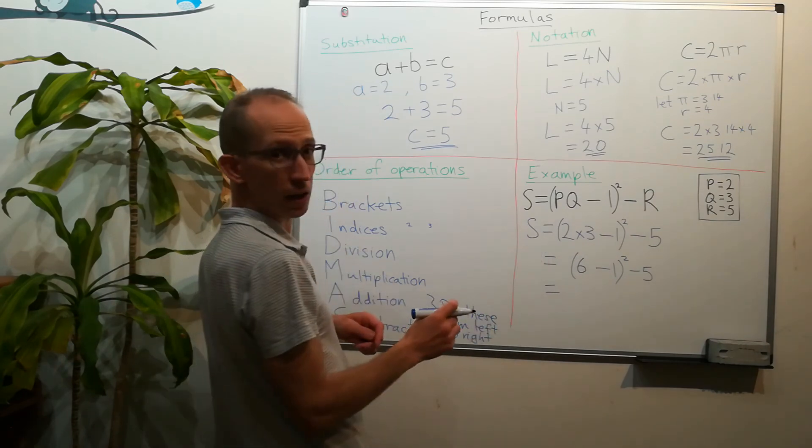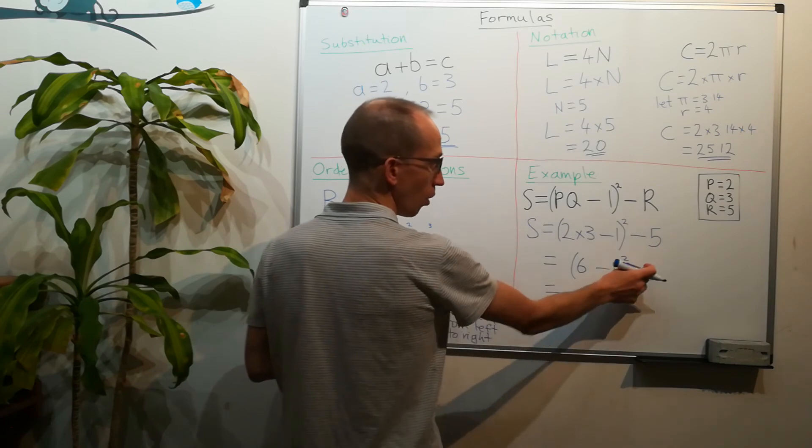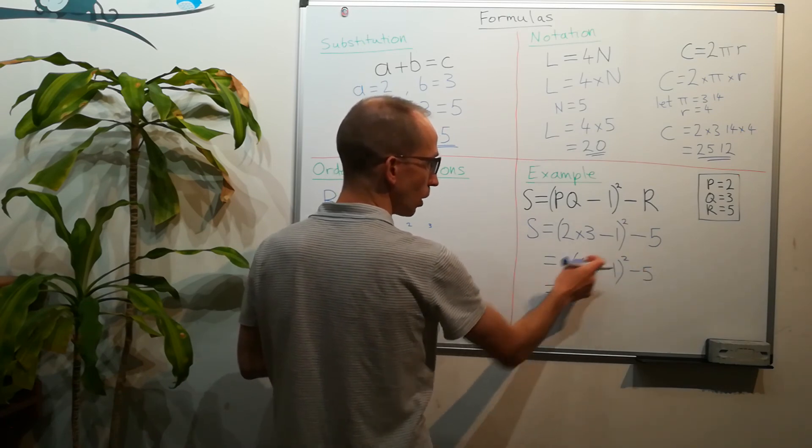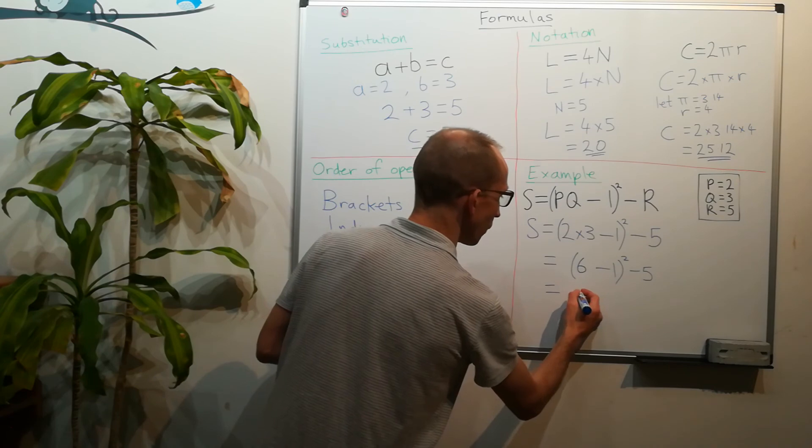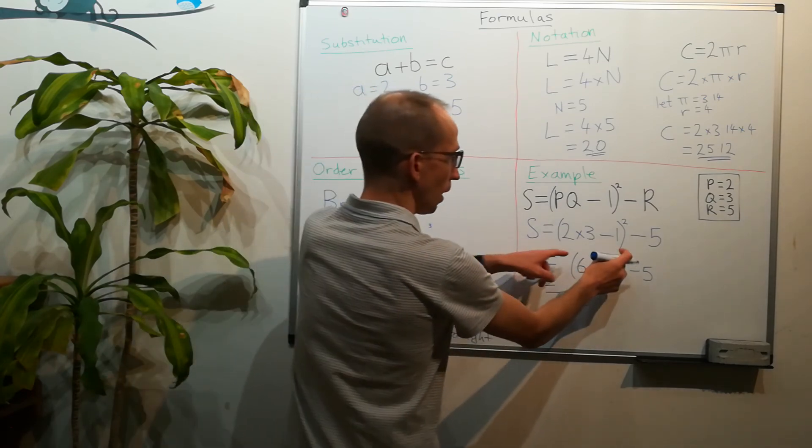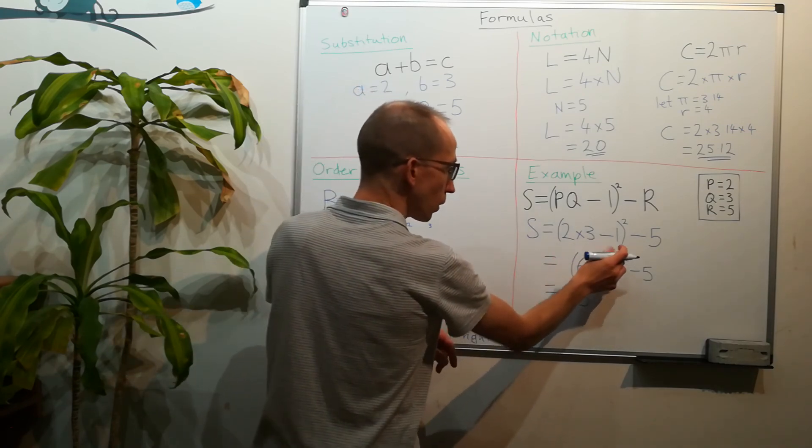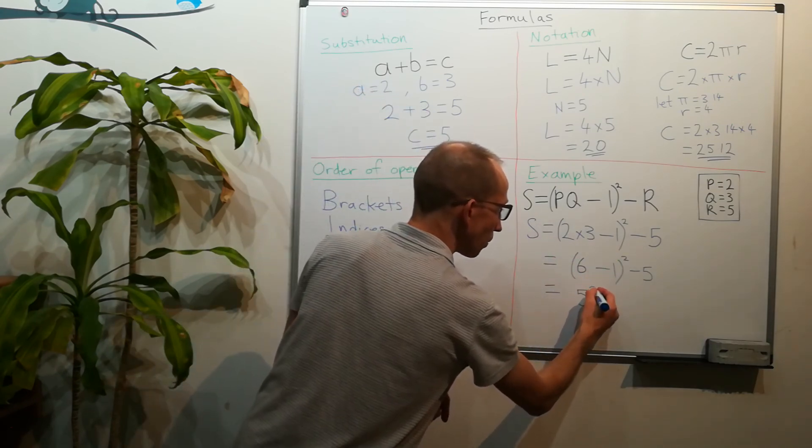We've still got our brackets so we're not going to do the squared yet or the minus 5, we're going to do what's in the brackets. So 6 minus 1 is 5. Now the brackets go away because we've done everything in the brackets, but the squared stays. So we've now got 5 squared minus 5.